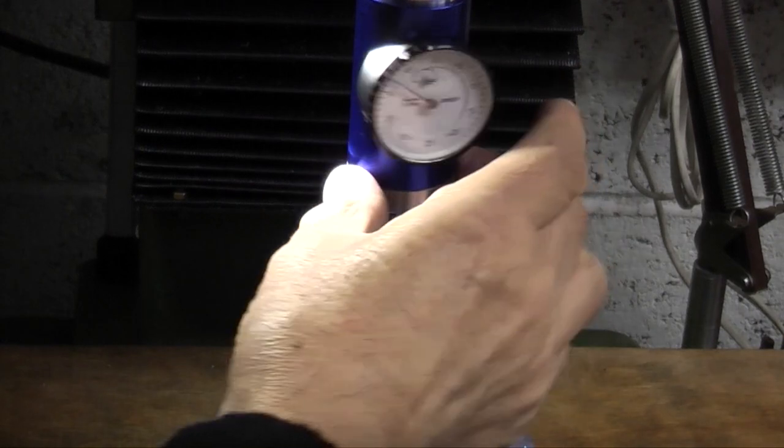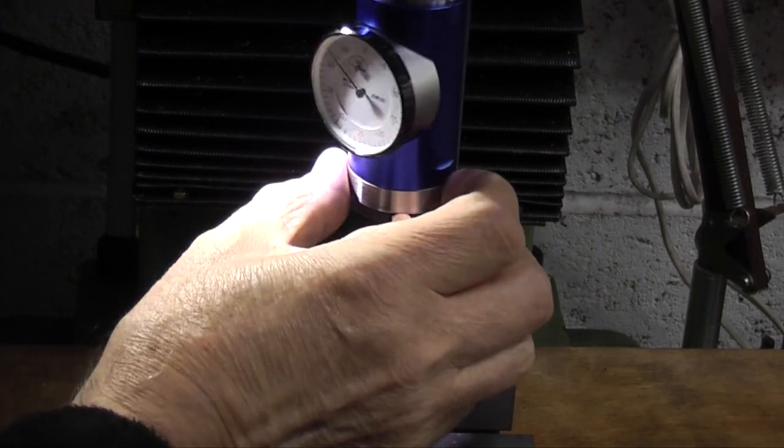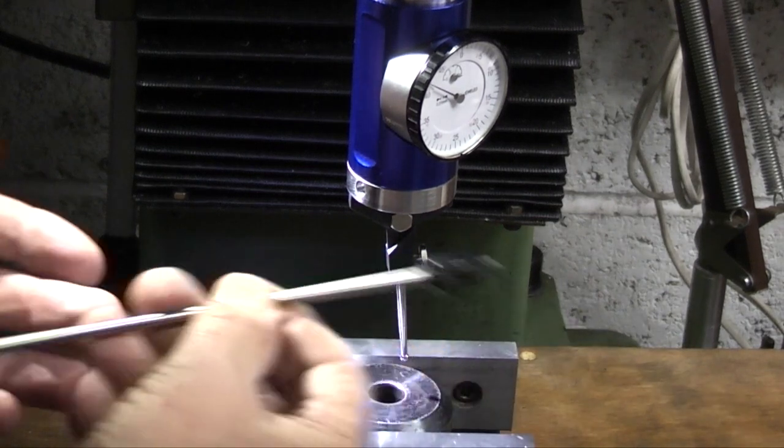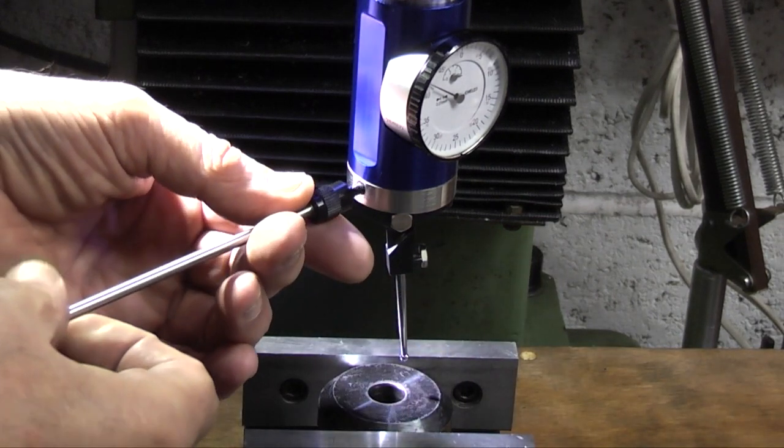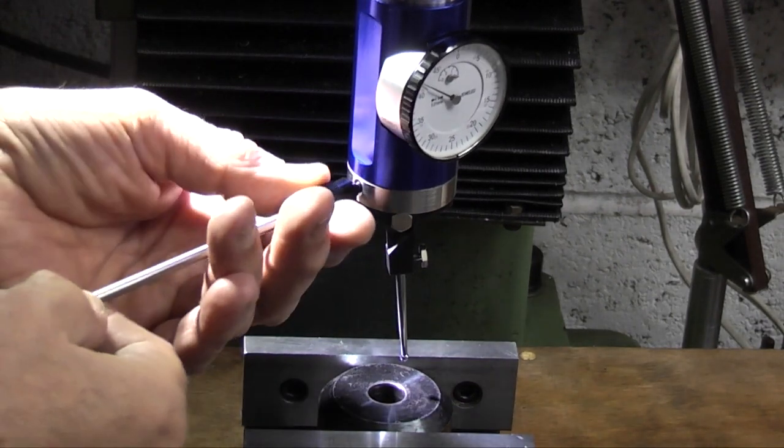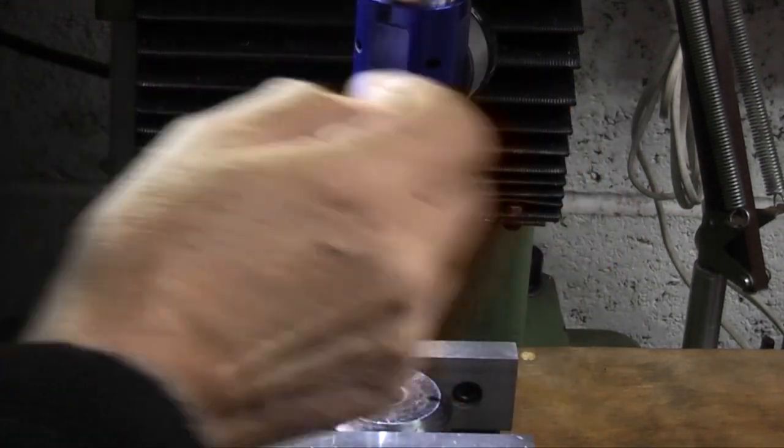Now there's a hole each side of this base for this rod to go in. This is the handle so you can hold the indicator so it doesn't spin around with the spindle.